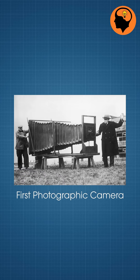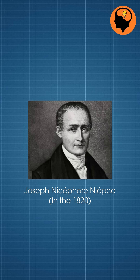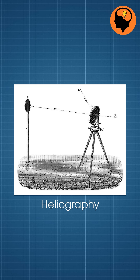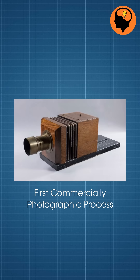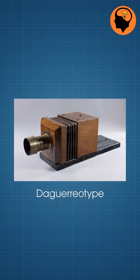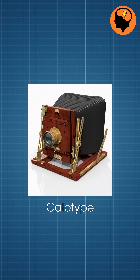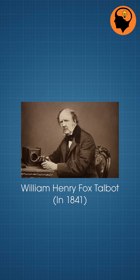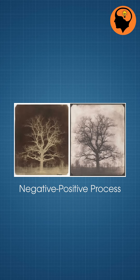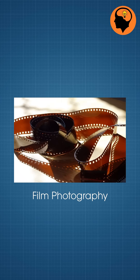The first photographic camera was invented by Joseph Nysfor-Neeps in 1820, using a process called heliography. The first commercially successful photographic process was the daguerreotype, which was invented by Louis Daguerre. Calotype was invented by William Henry Fox Talbot, which was a negative-positive process used in film photography.